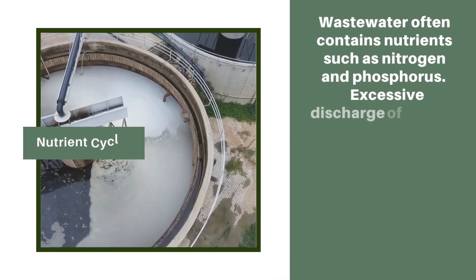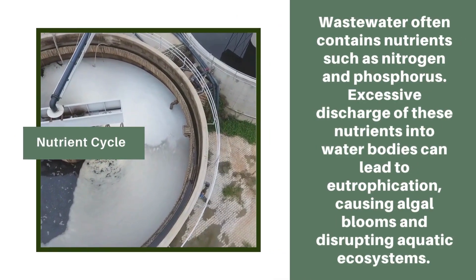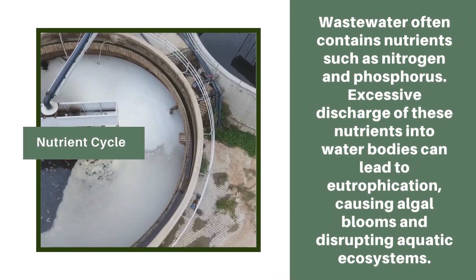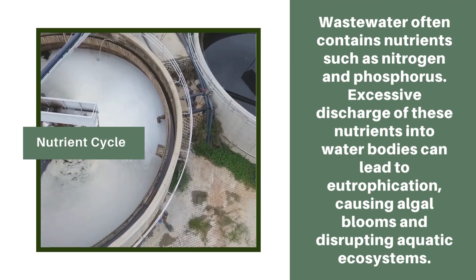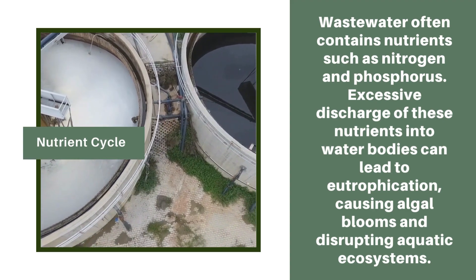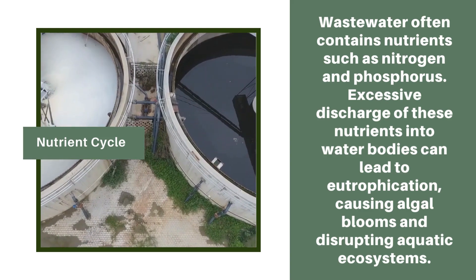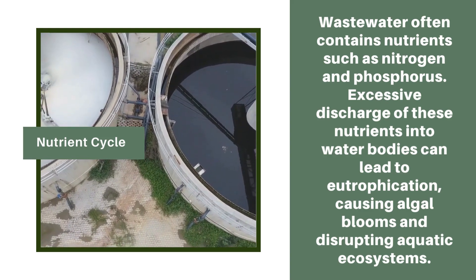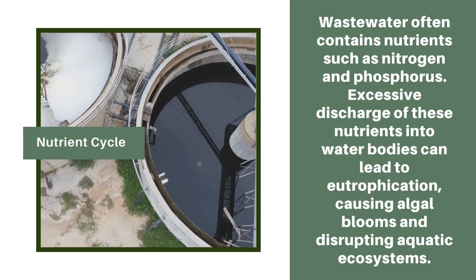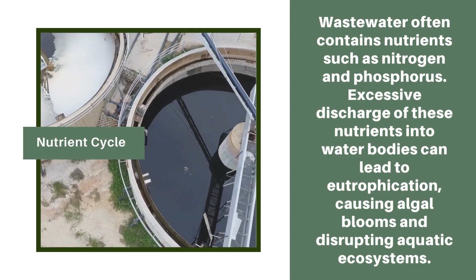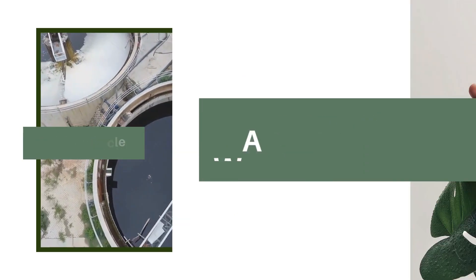In the nutrient cycle, wastewater often contains nutrients such as nitrogen and phosphorus. Excessive discharge of these nutrients into water bodies can lead to eutrophication, causing algal blooms and disrupting aquatic ecosystems.